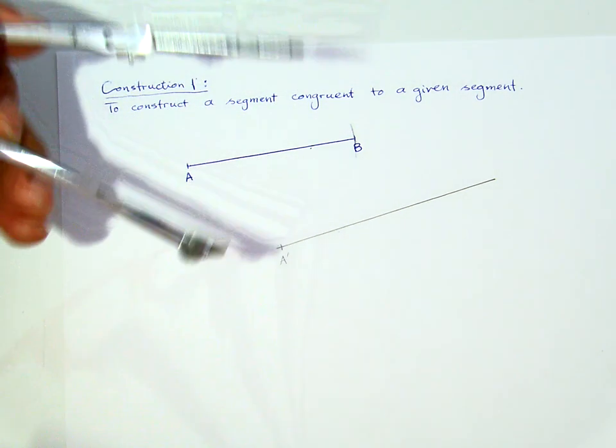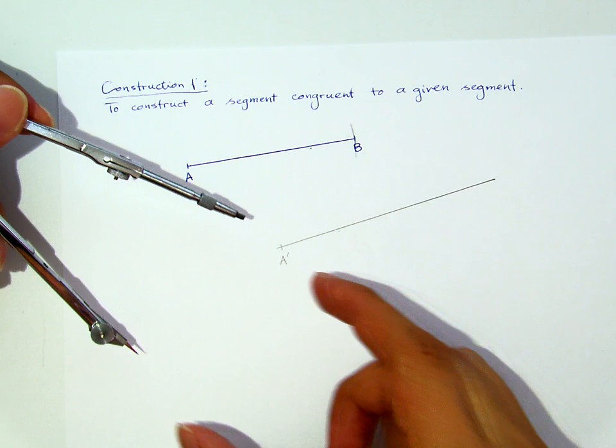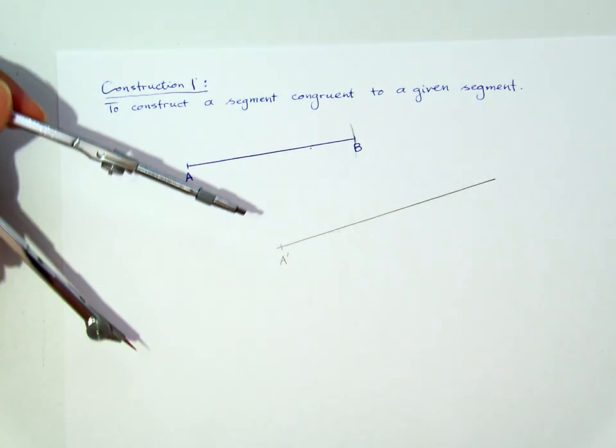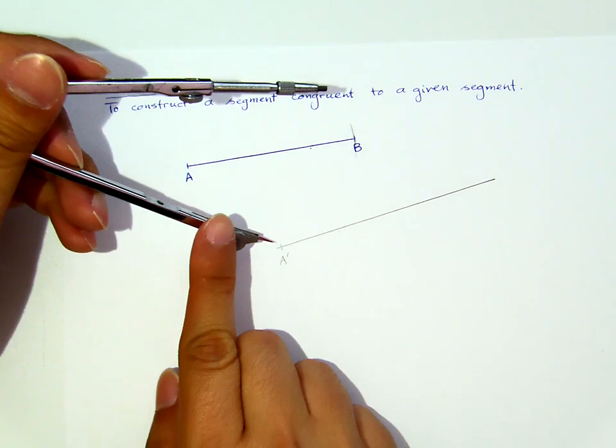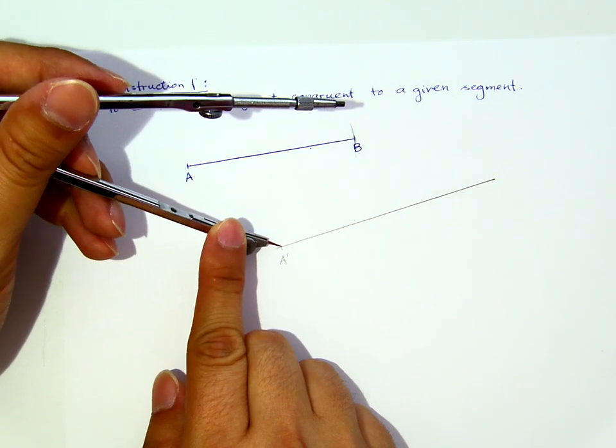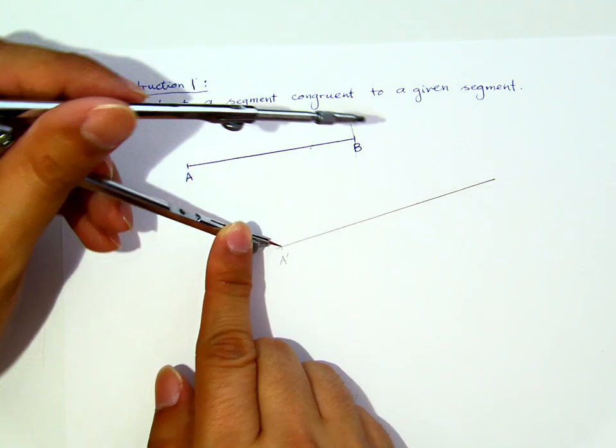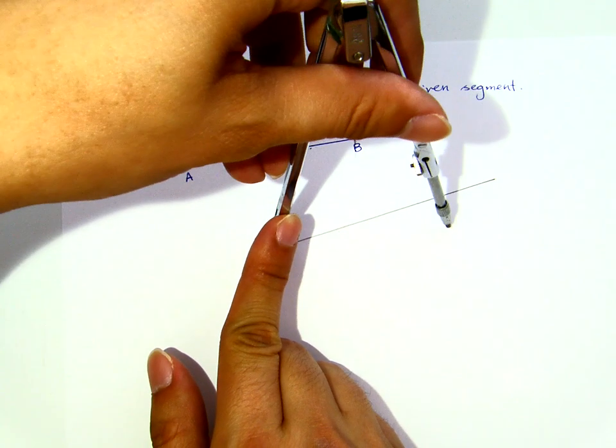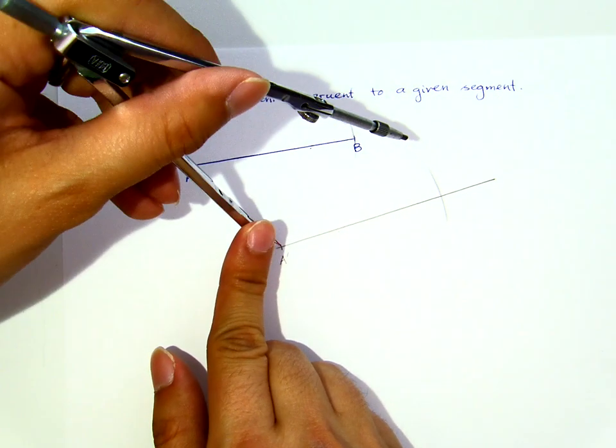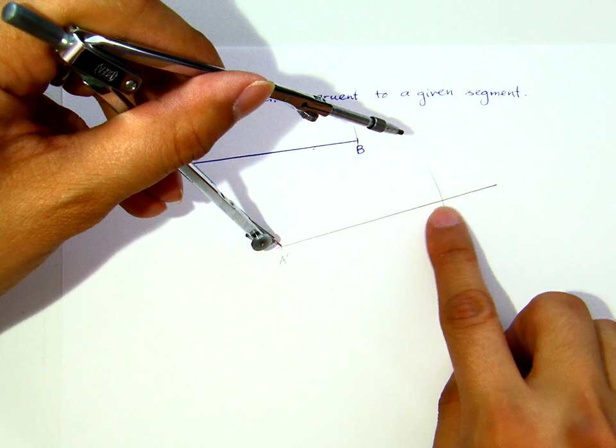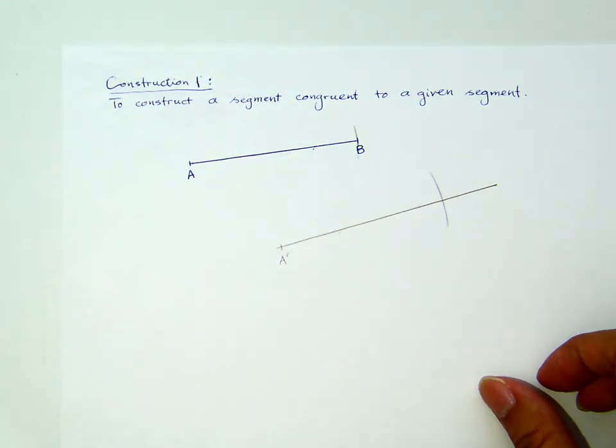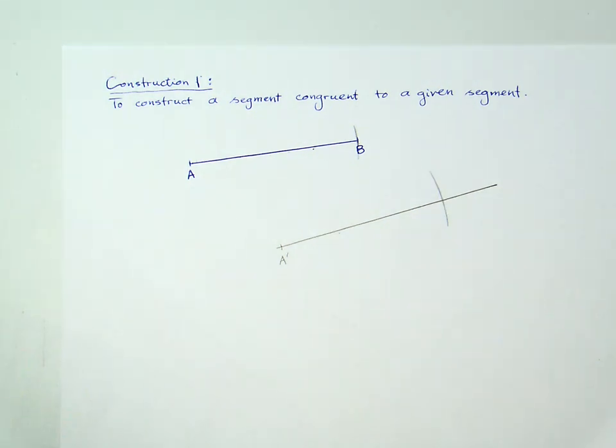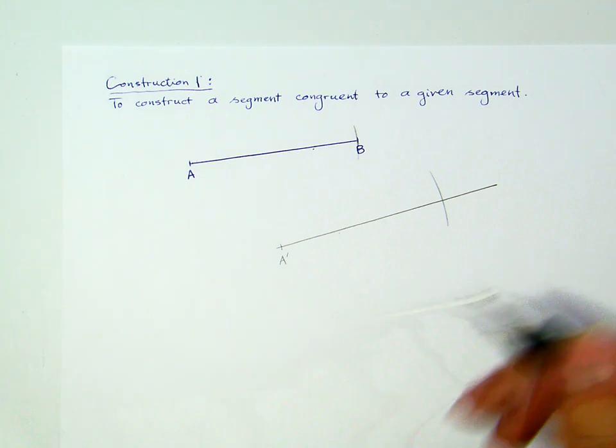Now this opening, the opening of this compass right now is congruent to that AB. Now I will use this with this pivot point at A'. Now I swipe through the point there, the line there. Now, the intersection of this line and this arc now is congruent to the correspond to B. That's now our B'.